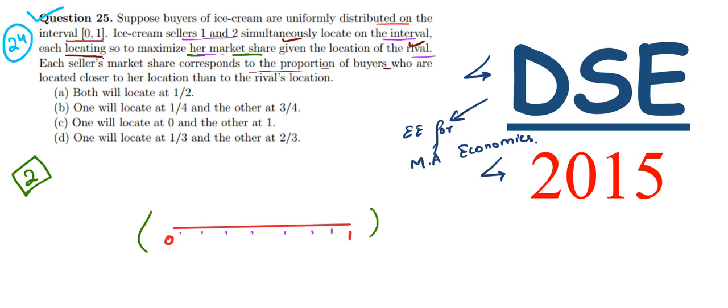Let the positions of ice cream sellers 1 and 2 be at the corners. Here we have seller 1 and here we have seller 2. As you can see, the buyers on the left side of 1 will go to 1.